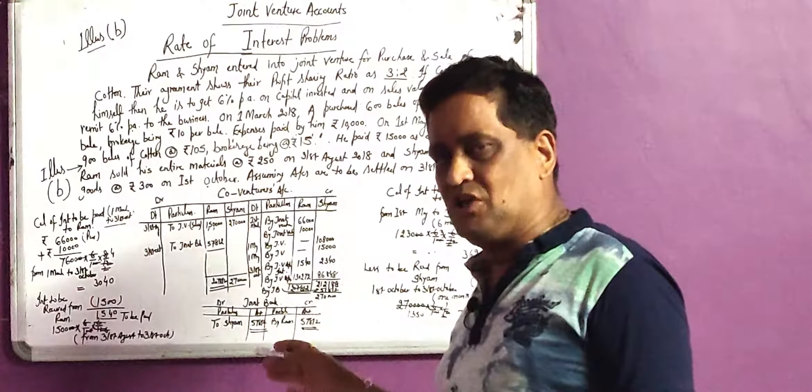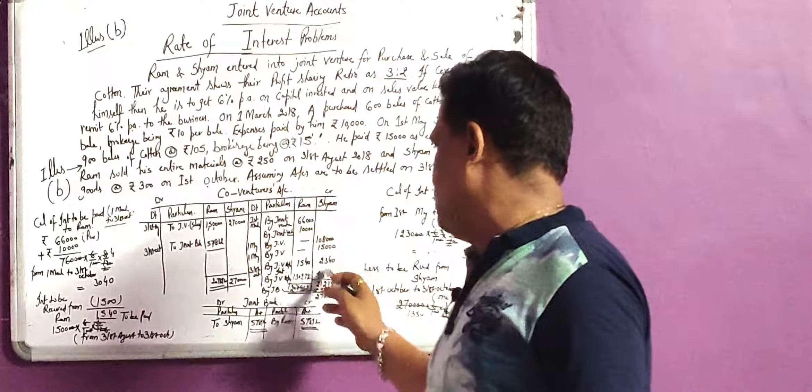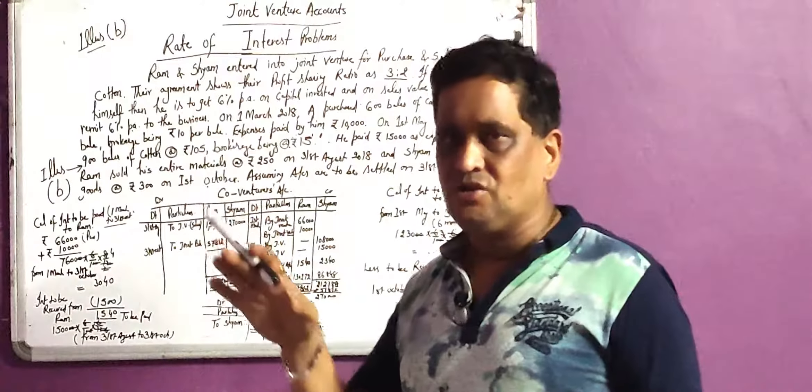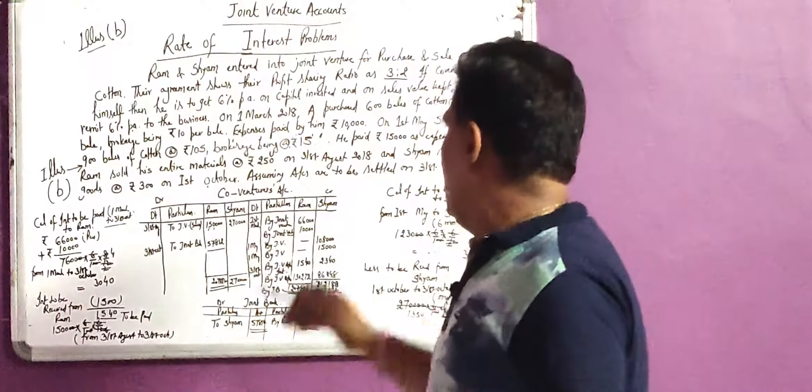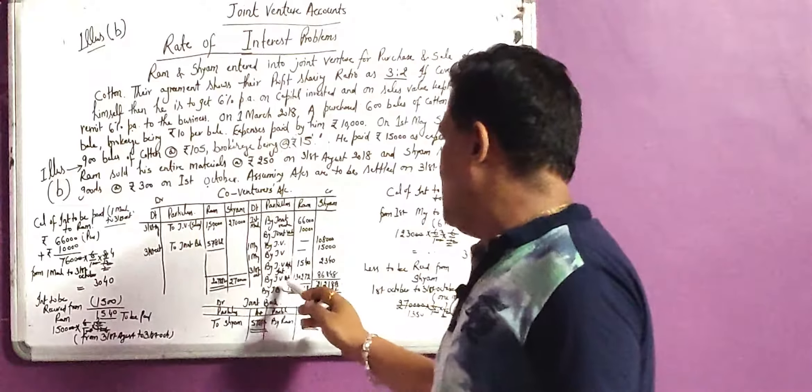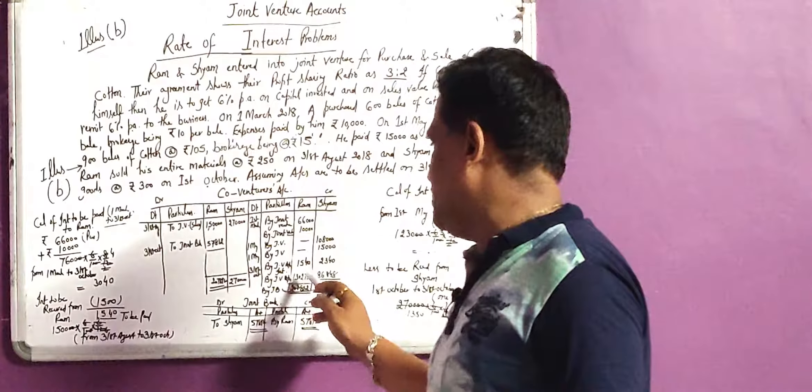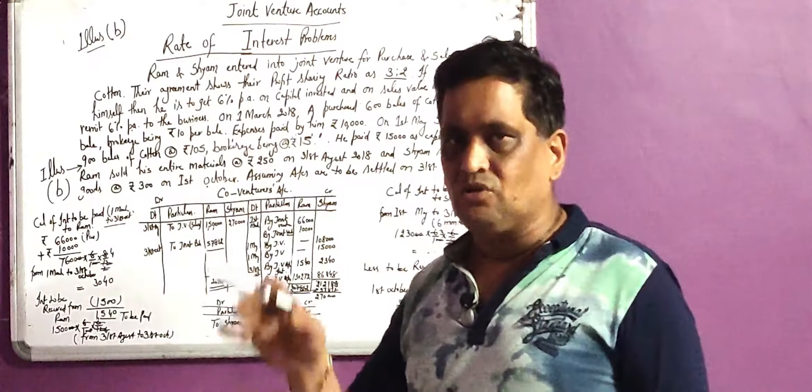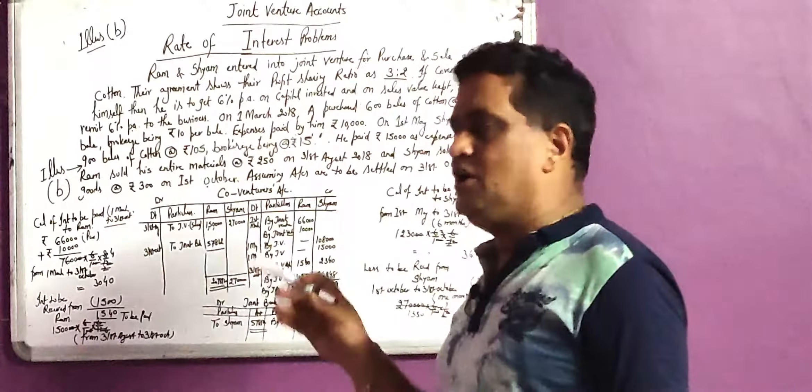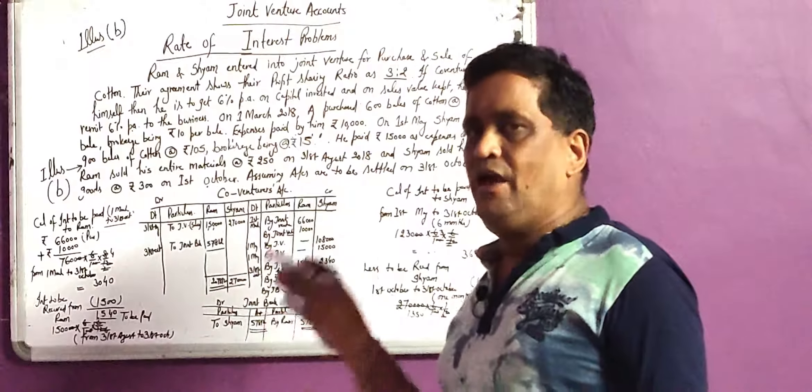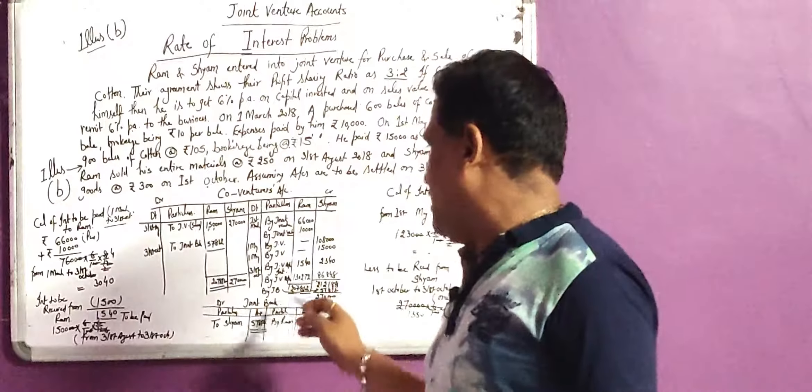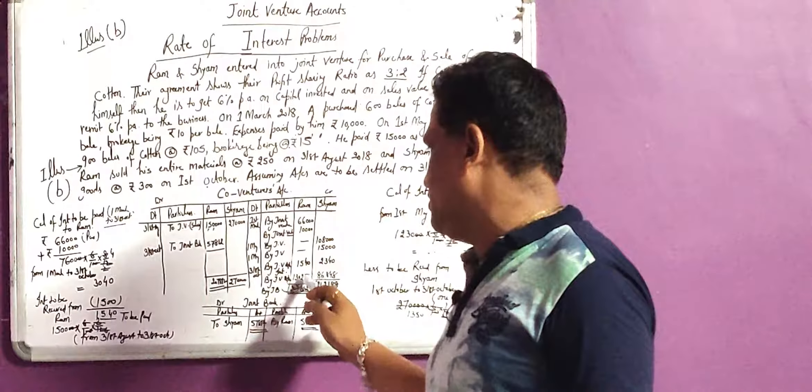We have posted share of profit. In the end, we divided share of profit and profit was 3 is to 2 and we distributed. Ram's share was 130,072. It was debited to the joint venture account. But when we are preparing co-venturer account, it will be on the credit side and it will be written by joint venture in bracket share of profit, that will be 130,072.